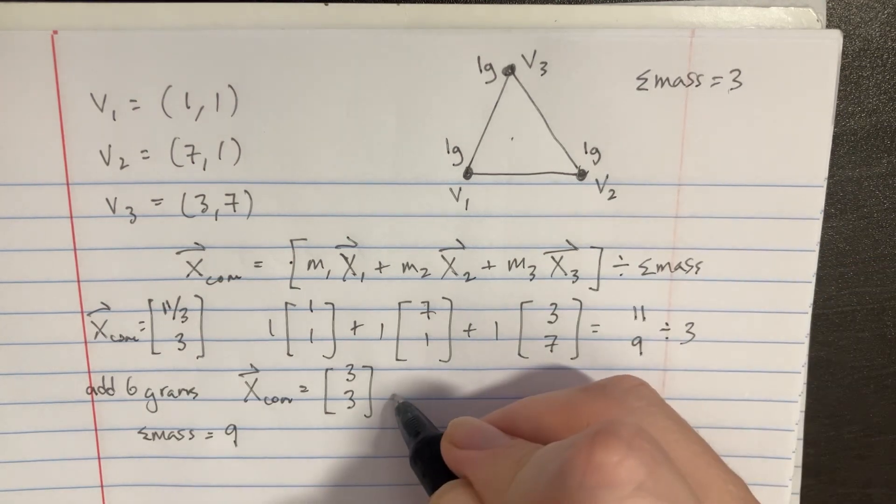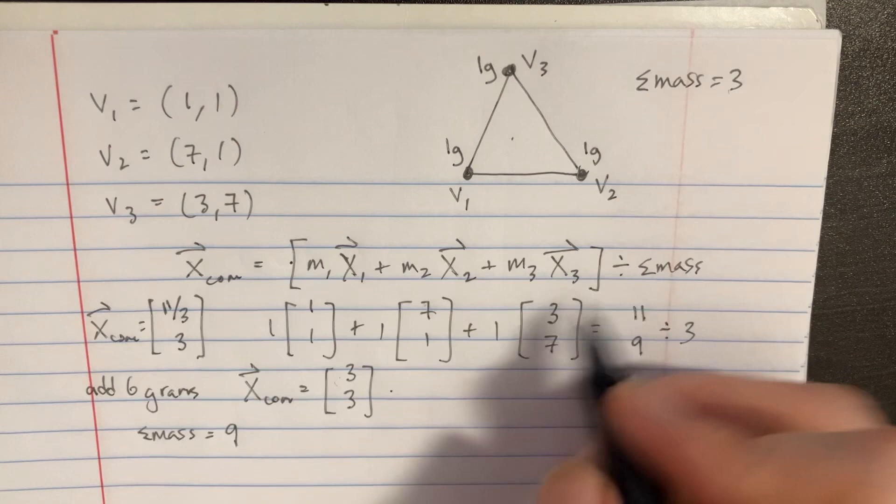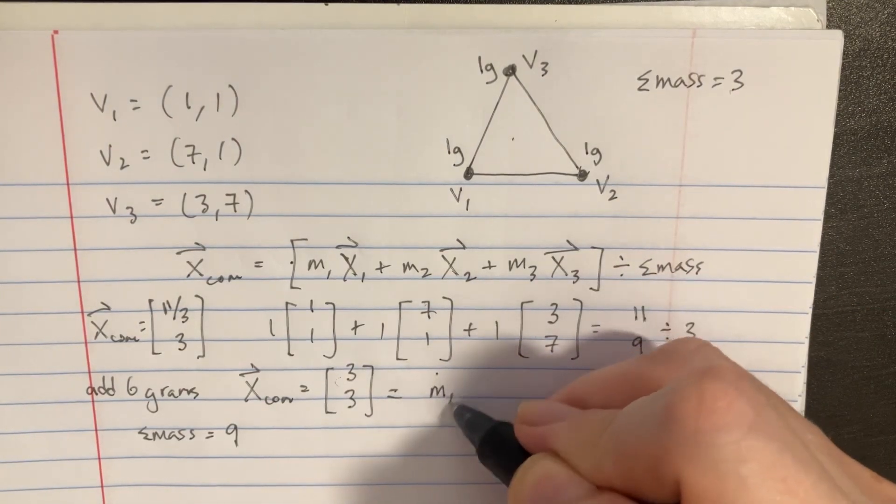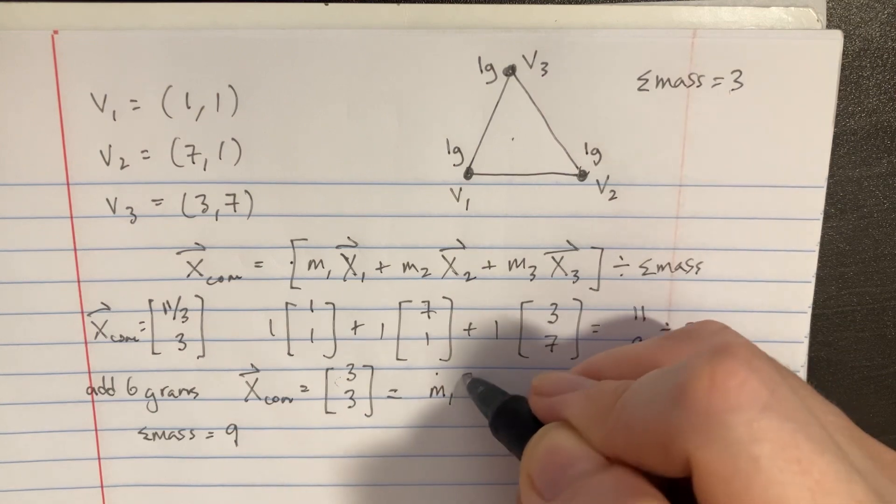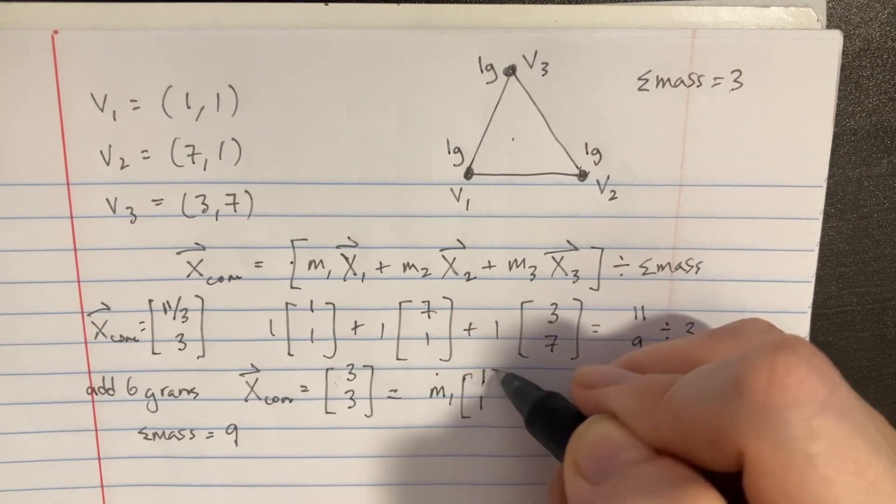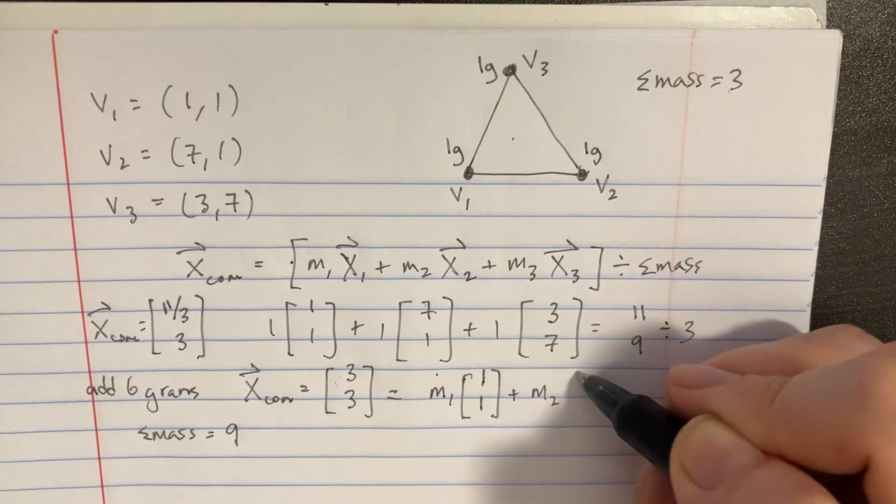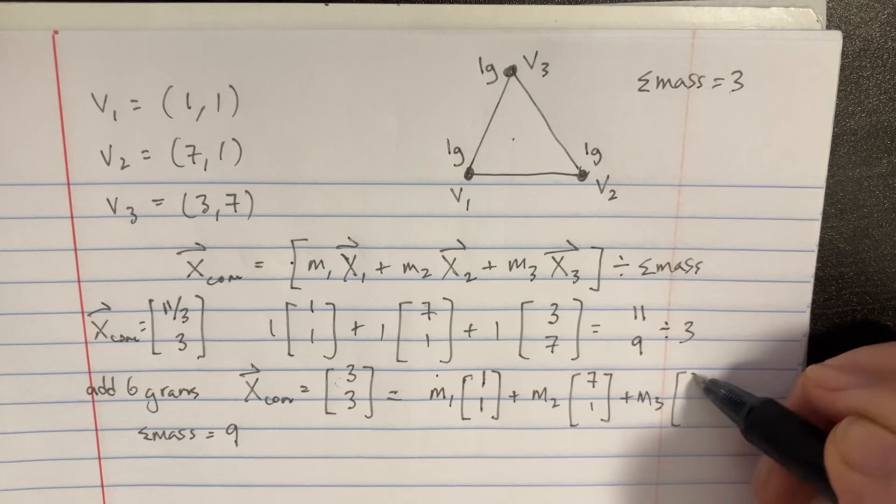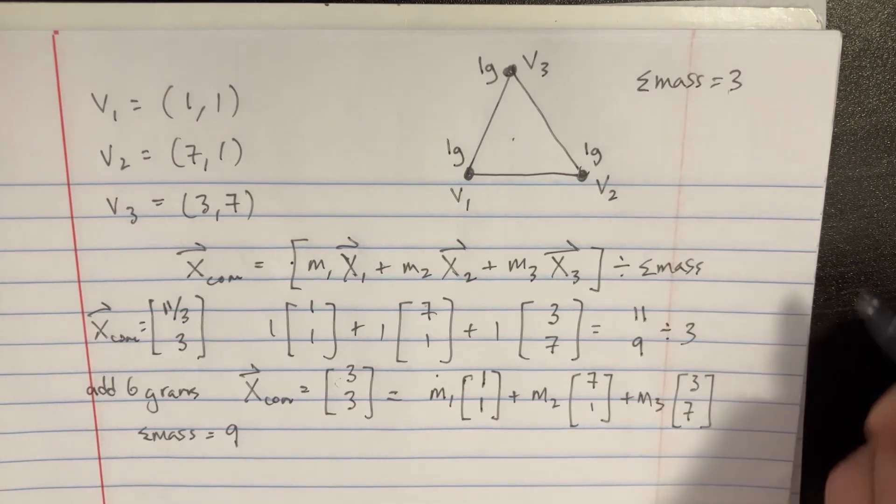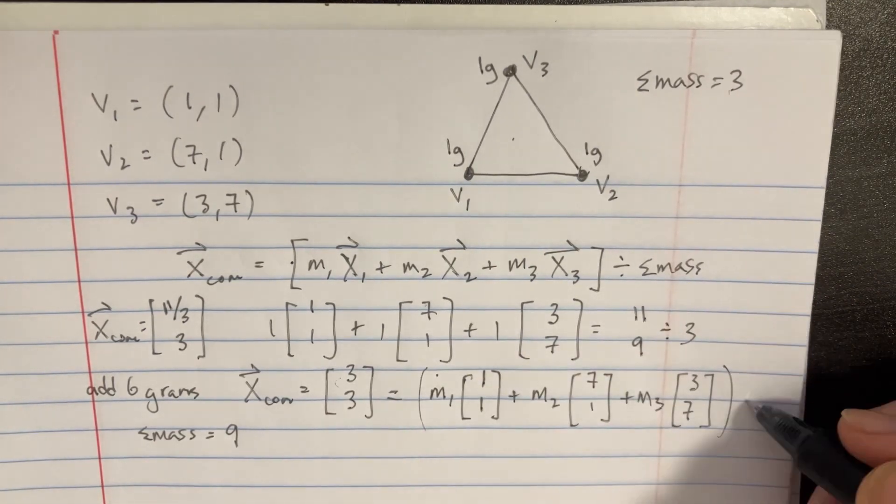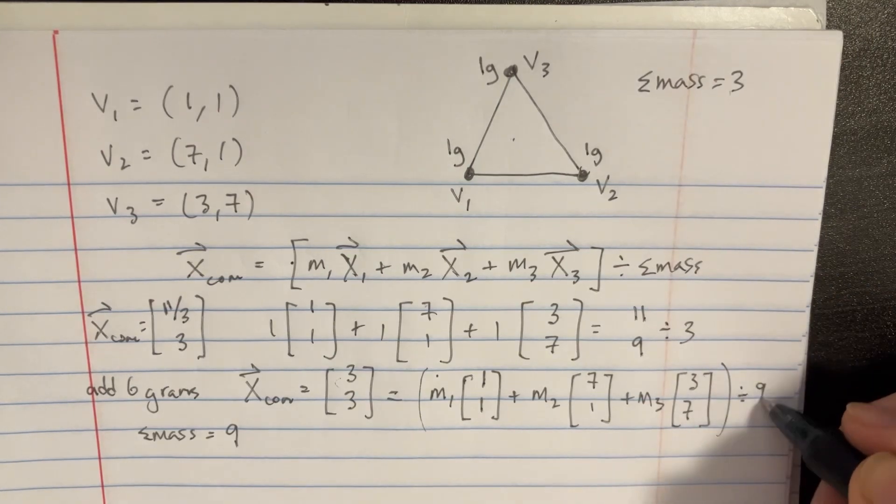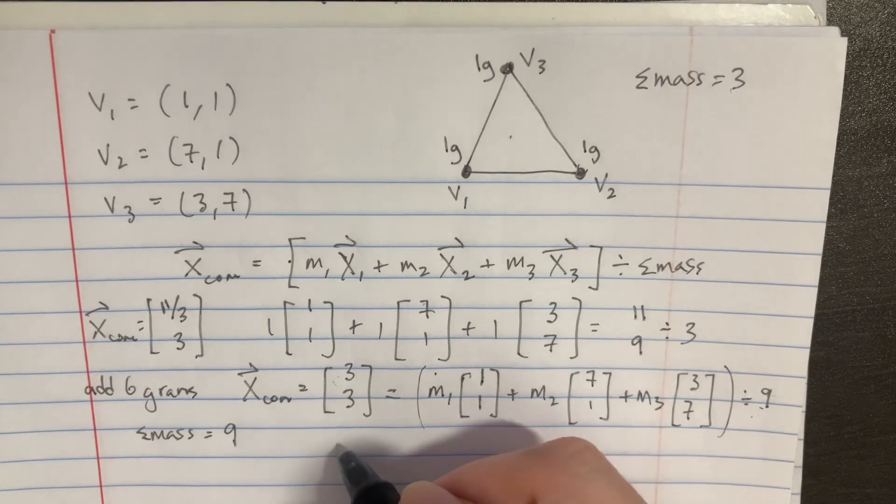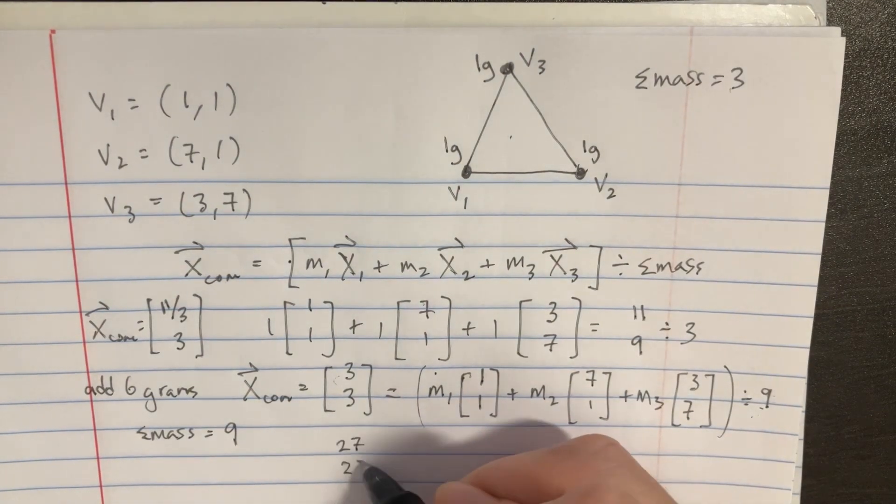Let's set up that equation here because this would be the answer to this whole problem. So we would set that equal to, we don't really know what m1 is, but we do have the position. So we'd have (1,1). And then we don't know what m2 is, but we do know it's (7,1). And then we don't know m3, but we do know that it's (3,7). And then here, you would basically take a big parentheses and divide this by the 9 over here. So let's just go and multiply that to the other side, giving us 27 over 27 here on this thing.